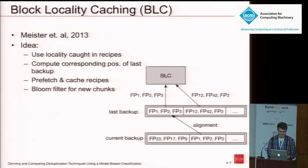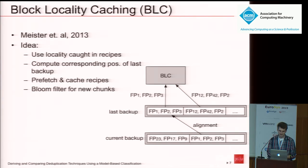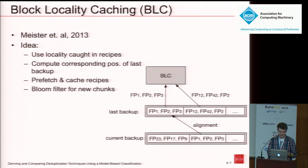Block locality caching is a system which works with recipes instead. The idea is that a backup is very similar to its predecessor. In theory, you could compute for your current position in the currently running backup the corresponding position in the last backup, and prefetch the recipes generated at that point, then try to identify chunks based on these recipes. This also works pretty well, generating a hit ratio of above 99%. But again, new chunks are guaranteed to miss each time, so there has to be a bloom filter.